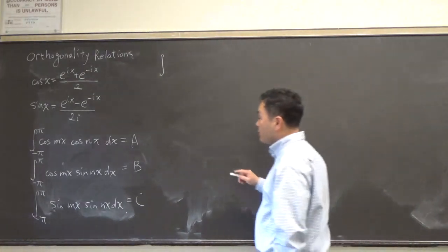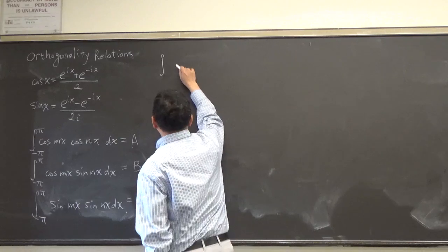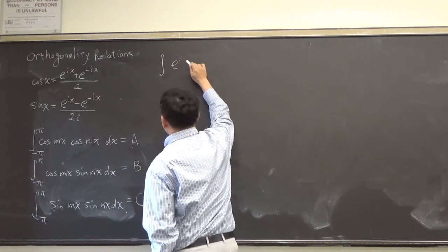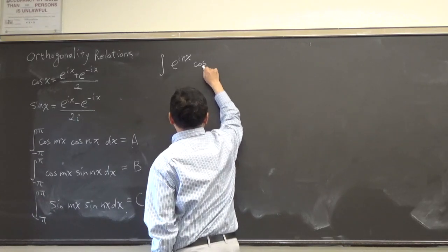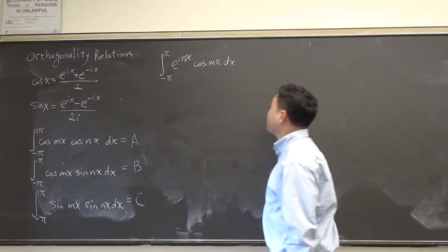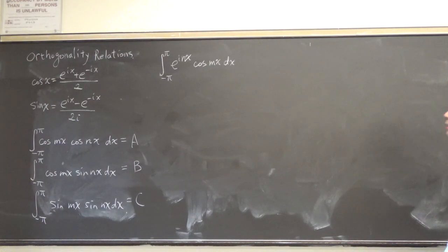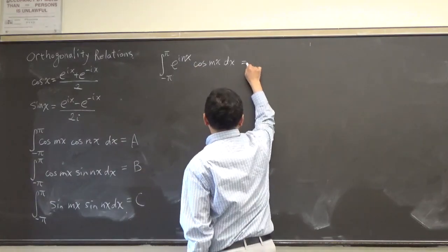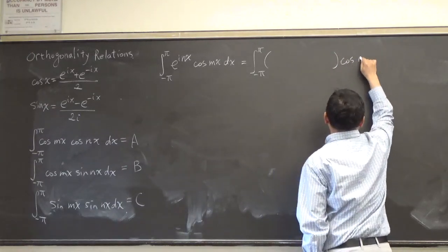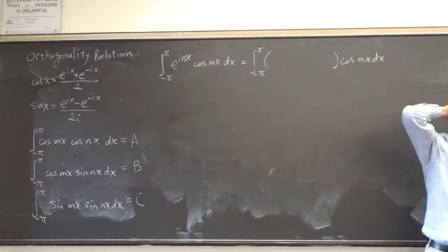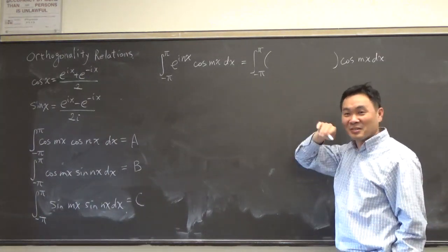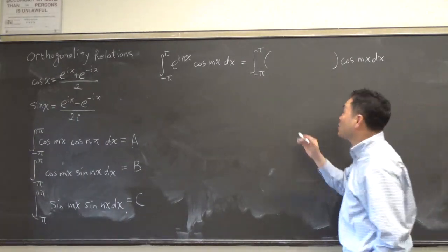So you want to integrate e^(inx) times cosine mx dx from negative pi to pi. Now the Euler identity says this is equal to, let's see, who can write this? What goes inside the parenthesis? We just wrote down the Euler identity. I want to see if anyone remembers. Cosine nx? Cosine nx, yes.